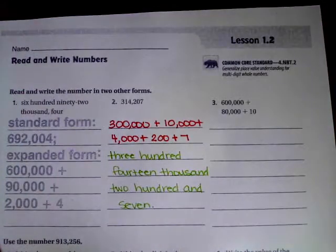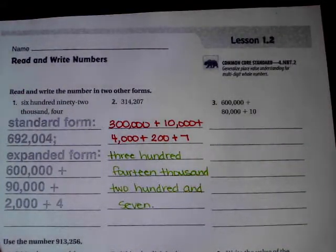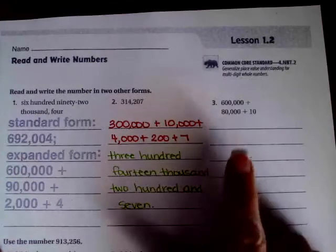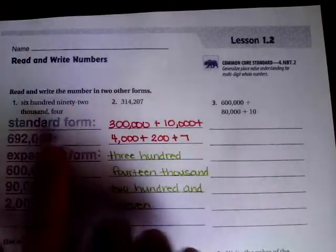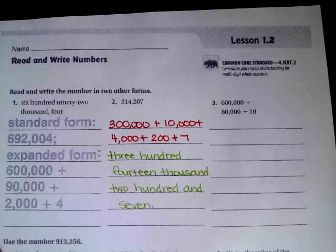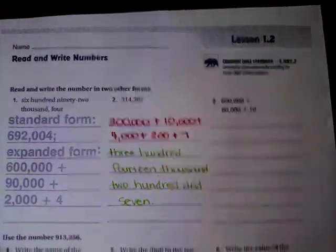That is exactly what you need to do for number three, so I'm going to let you do that. You're going to have to write this one in standard form, which is just like this guy, and in word form, which is just like this guy. Go ahead and do that. We're going to go down to number four.